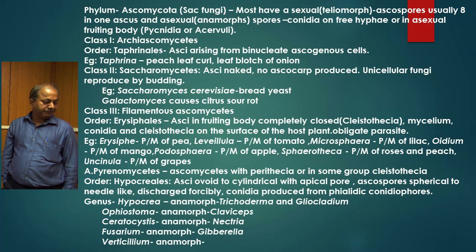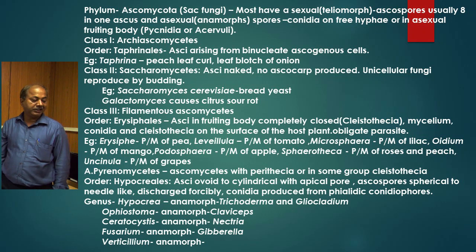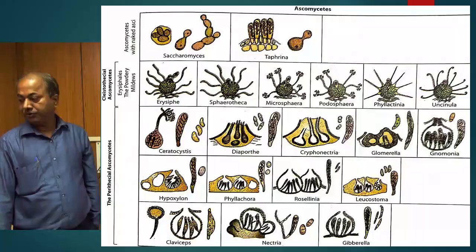The next class is Pyrenomycetes — Ascomycetes with perithecia, or in some groups cleistothecia also. Under this class, the order is Hypocreales. In Hypocreales, the asci are wide to cylindrical with apical pores; ascospores are spherical to needle-like, discharged forcibly, and conidia are produced from phialidic conidiophores. The genera are Hypocrea, Ophiostoma, Ceratocystis, Fusarium (perfect stage Gibberella), and Verticillium.